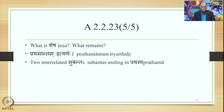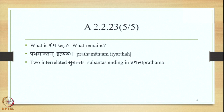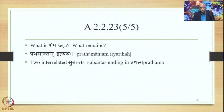What is Shesha? What remains is Prathamantam Ittyarthaha — two interrelated Subantas ending in Prathama that are not yet stated to be compounded. That is what is Shesha, and in that sense the Bahubrihi Samasa takes place.